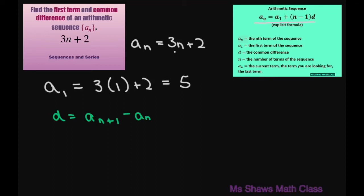So that's going to equal your current term which is 3 times (n+1) plus 2 minus a_n which is 3n plus 2.